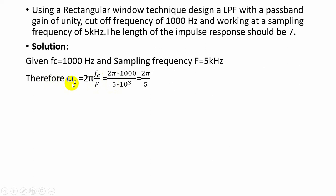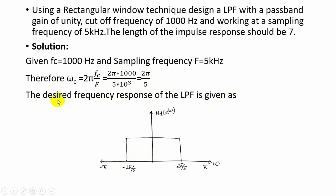From the given values, we can determine the angular frequency, which is equal to 2π times the cutoff frequency divided by the sampling frequency — that is 2π × 1000 / (5 × 10³) Hz. The desired frequency response of the low pass filter: the frequency varies from −π to π, and from −2π/5 to 2π/5 the response equals 1; in all other cases the response equals 0.